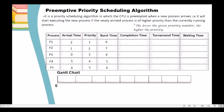Since it is only P3 which is in the ready queue at time 0, we are going to allocate the CPU to P3 even though it does not have the highest priority — its priority is 3. But since it is only P3 in the ready queue, we allocate the CPU to P3. P3 will execute until the next arrival time, which is 1. So P3 will execute until 1 unit of time.